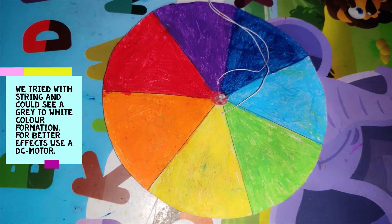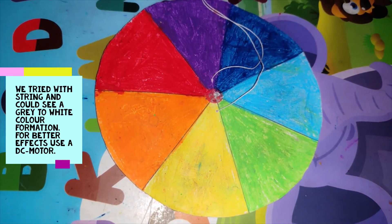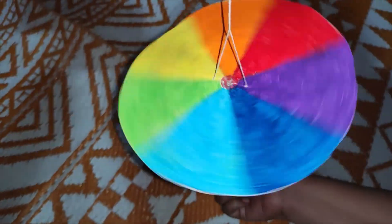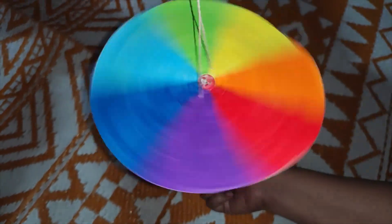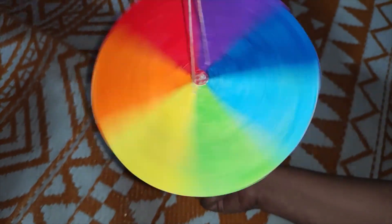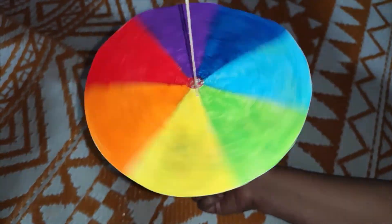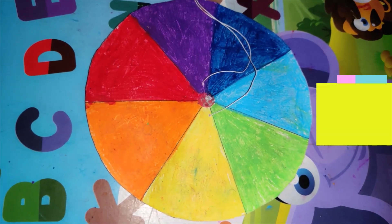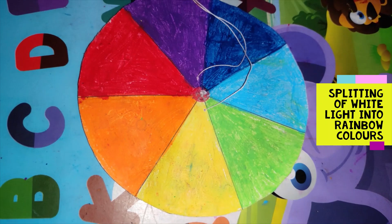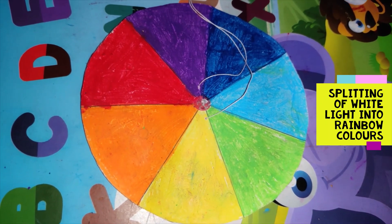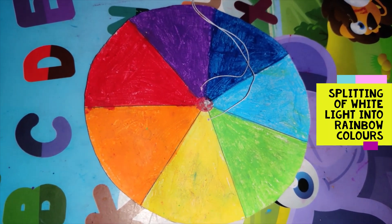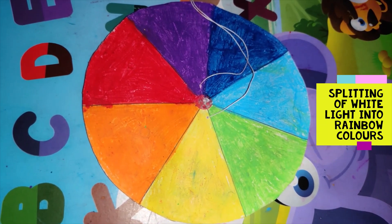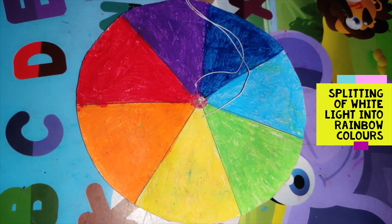The white light is made up of the seven colors of the rainbow. When it rains and suddenly the sunlight comes, the white light is splitting into rainbow colors, and we can see the beautiful rainbow in the sky.